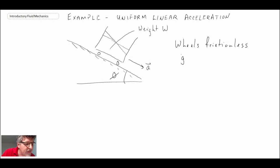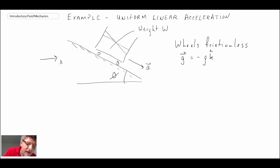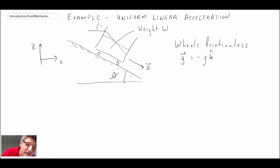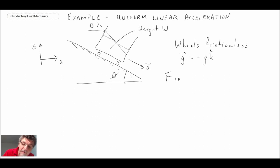The gravity vector is the Earth's gravitational vector, so that's minus g times k. Our coordinate system has x in the horizontal direction and z in the vertical direction, which represents the initial condition of the container. What we're told to solve for is angle theta — the angle that the fluid free surface makes with respect to the horizontal when the container is accelerating down the incline.